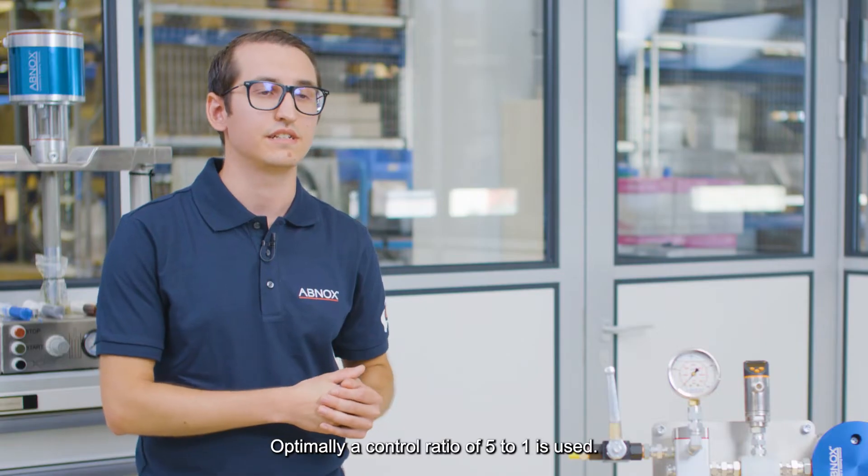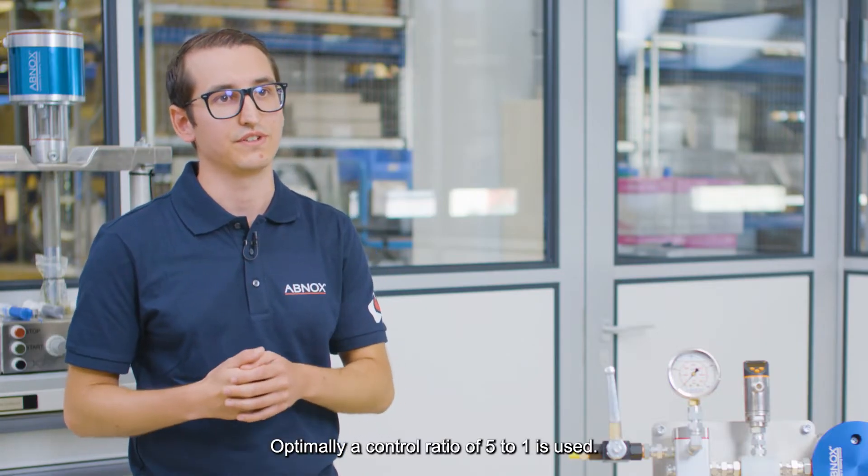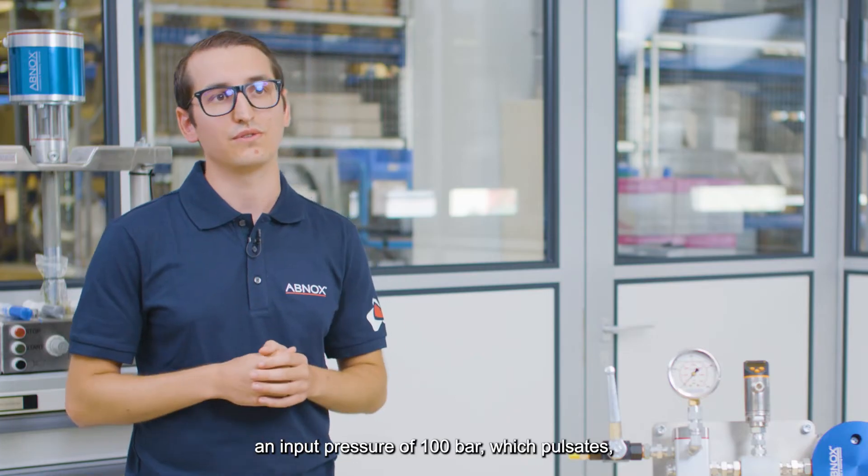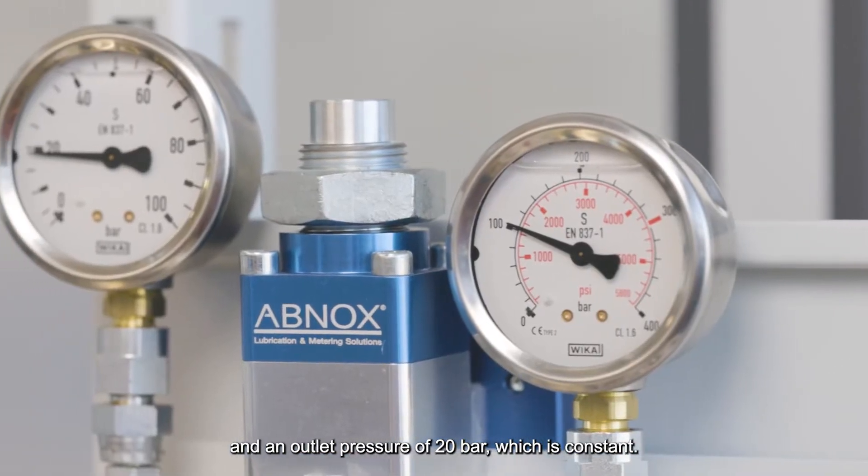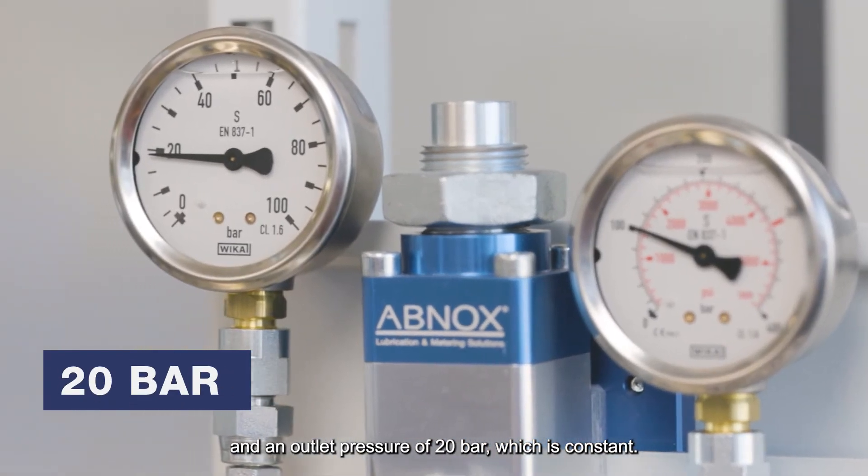Optimally, a control ratio of 5 to 1 is used. This means, for example, an input pressure of 100 bar, which pulsates, and an outlet pressure of 20 bar, which is constant.